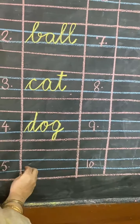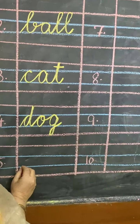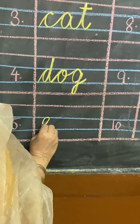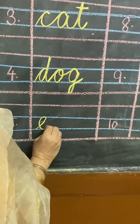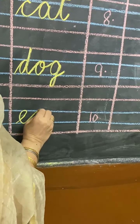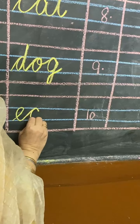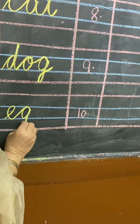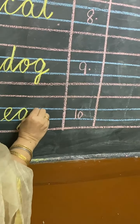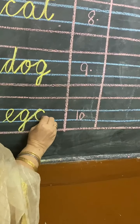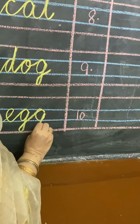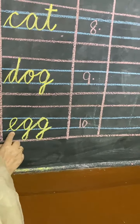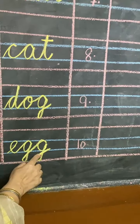Number 5, dictation word is E for Egg. E will come in two middle lines. G will come in lower three lines. E, G, G — egg.